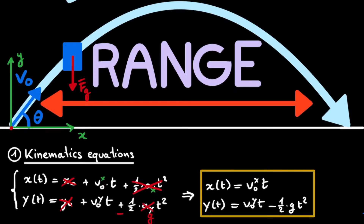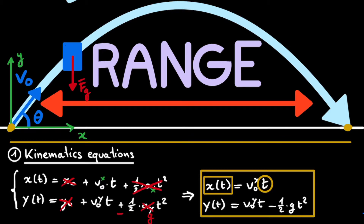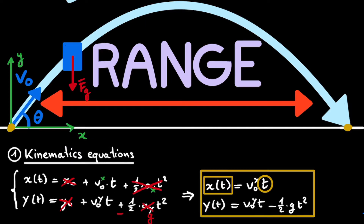How do we get the formula for the range from these two equations? The range is the difference in x position between the point where we start off and the point where we reach the ground again. The first equation tells us how the x position changes with time. However, we only have the variable t to work with, so in order to find the range, we need to find the time it takes for the object to reach the ground again. These two points that define our range are special because only at these points will our y coordinate be exactly zero, and this is where the second equation comes in.